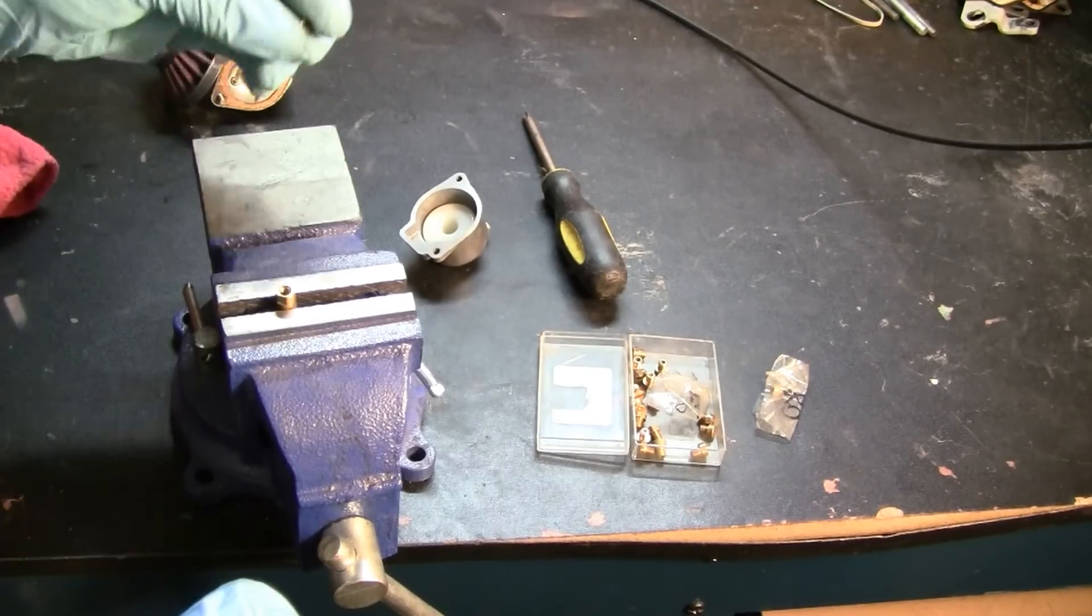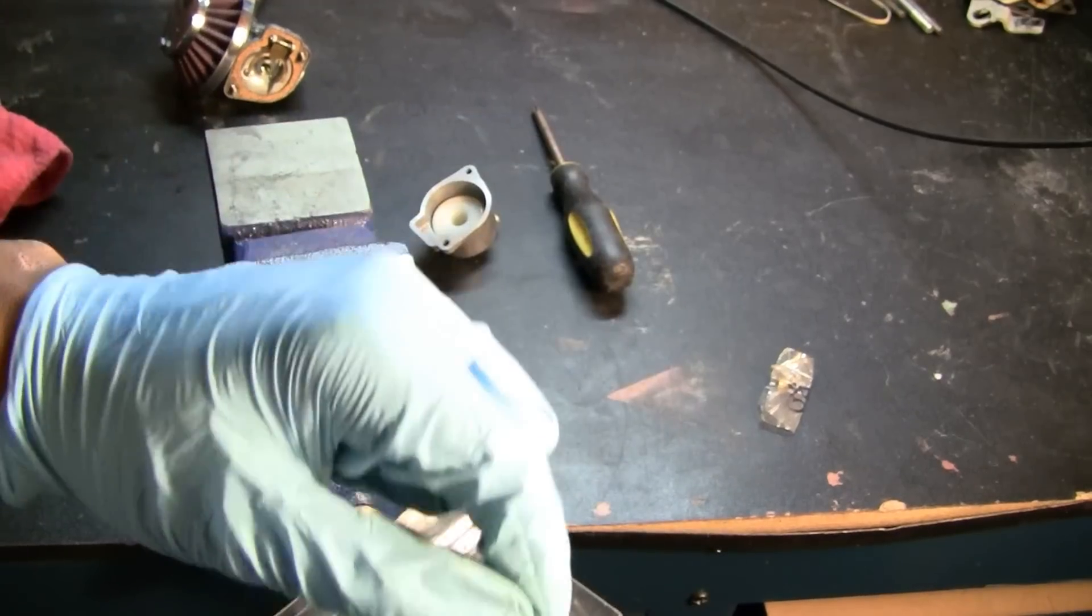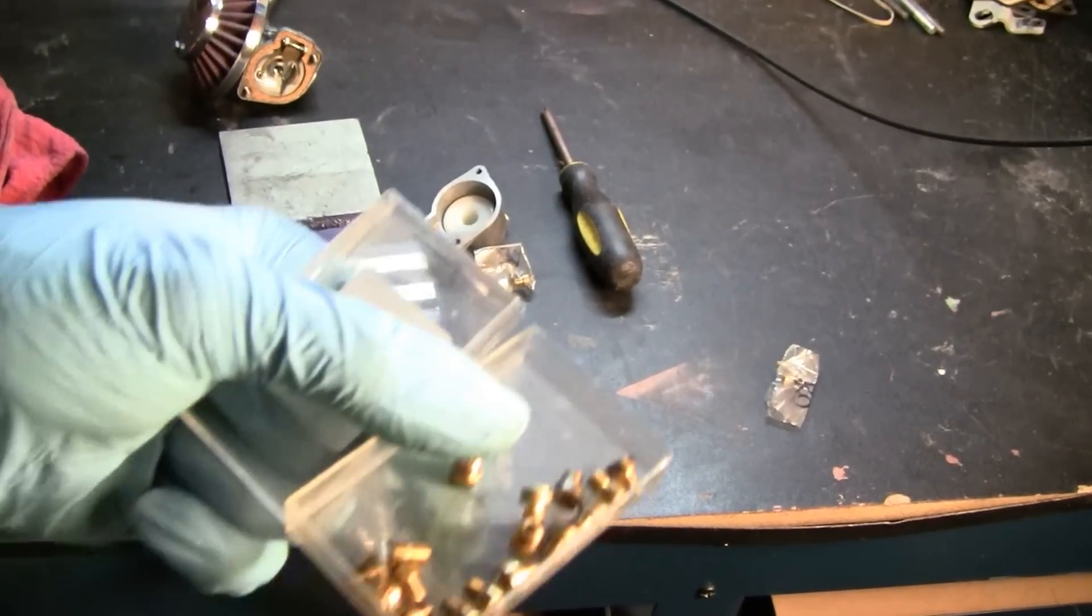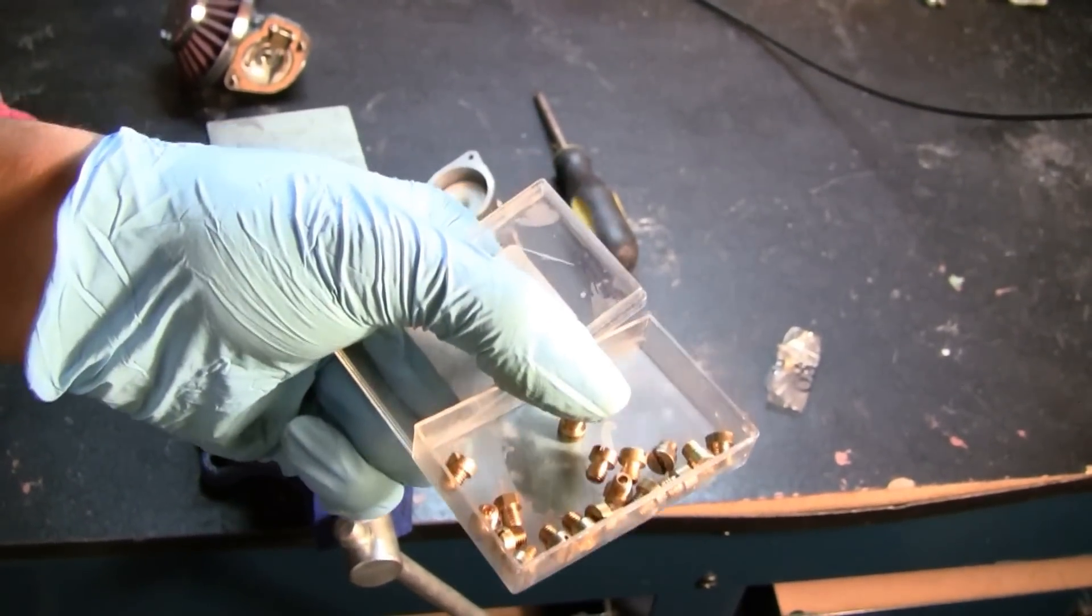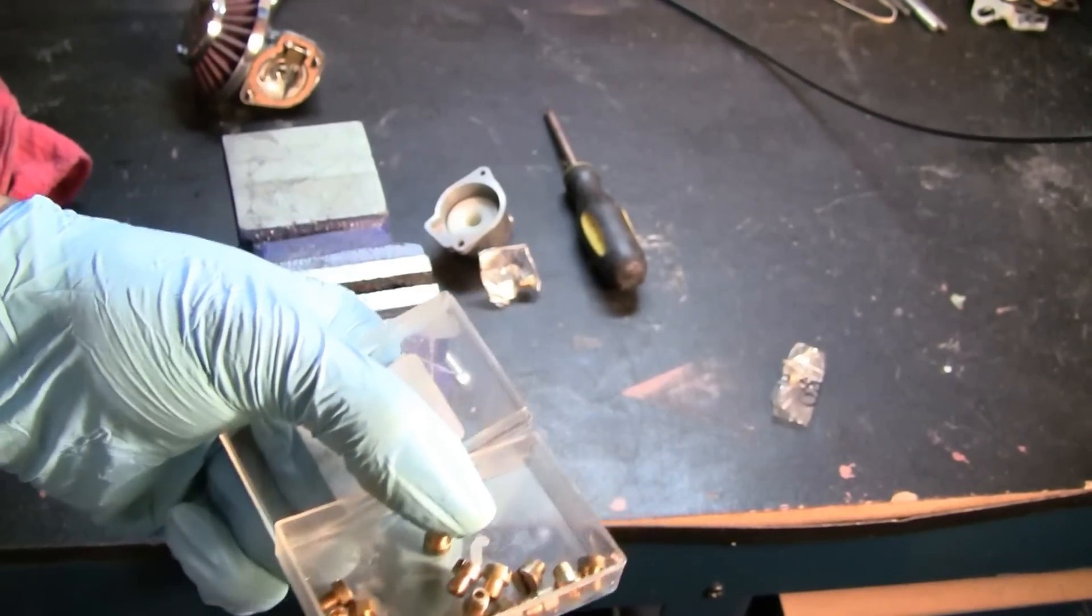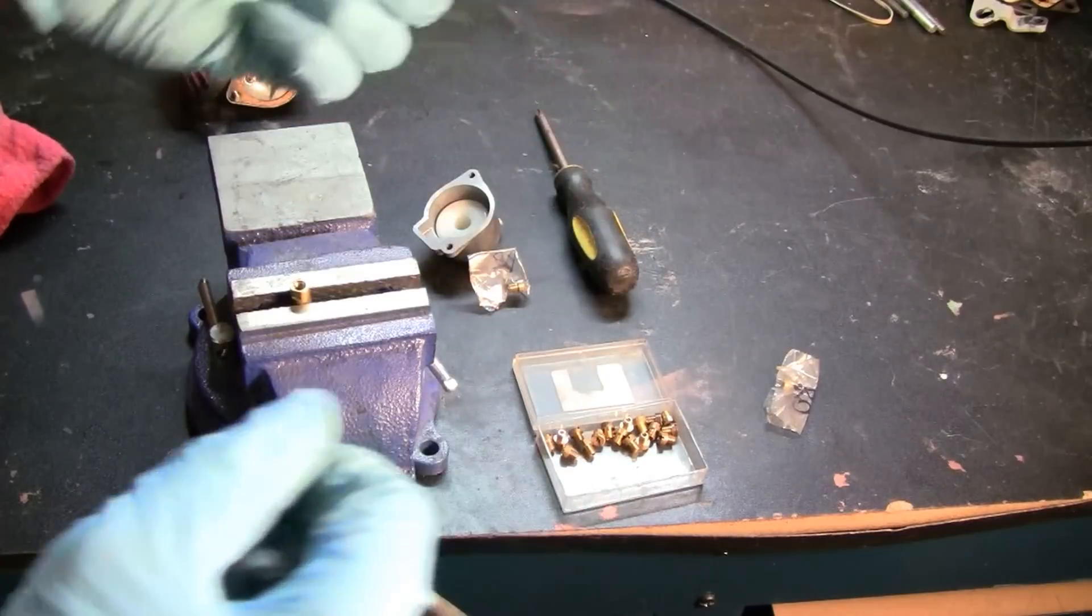It's always good to have on hand a bunch of jets that you can use. Jet sizes really range depending on what altitude you're at, if you're in a mountainous area or at sea level. I would do a lot of experimenting. If you buy a Dellorto jet, a good place to start would be around a number 68 or number 70.